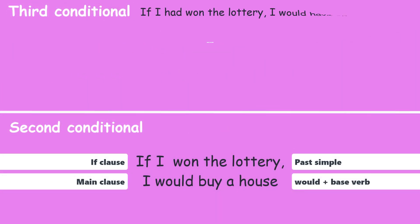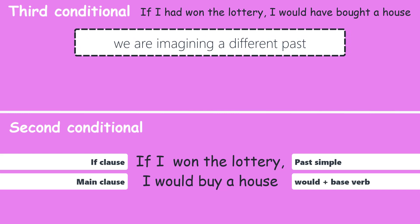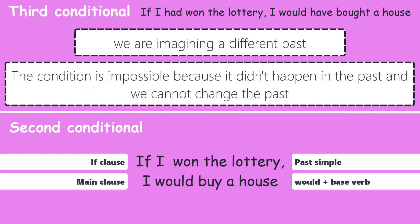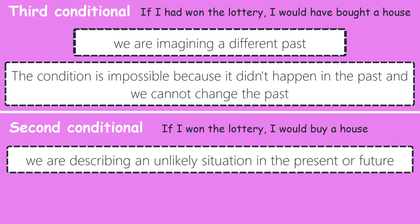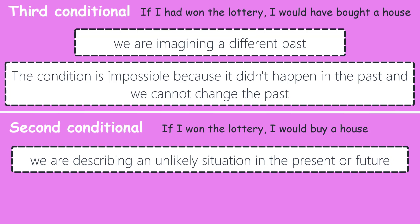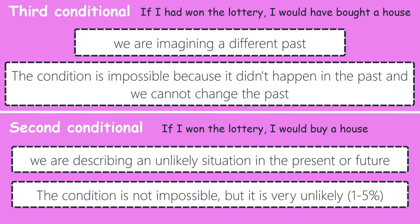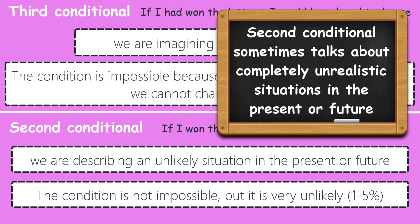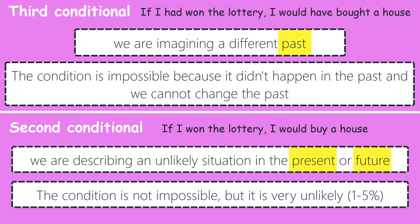When it comes to the third conditional, we are imagining a different past. The third conditional is the only conditional which refers to the past. The condition is impossible because it didn't happen in the past and we cannot change the past. With the second conditional, we are describing an unlikely situation in the present or future. The condition is not impossible, but it is very unlikely — perhaps a one percent probability. But still, it is possible. Unlike the third conditional, the second conditional has nothing to do with past time.